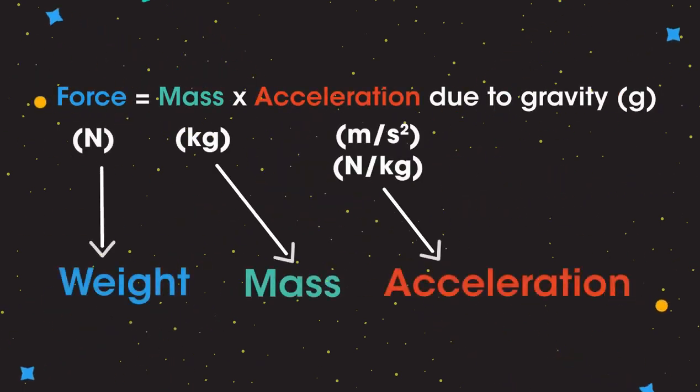The acceleration due to the Earth's gravity is measured in meters per second per second, or it can be measured in newtons per kilogram, as it's a force exerted on a unit mass.